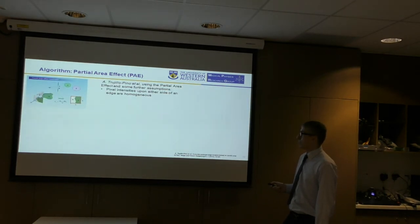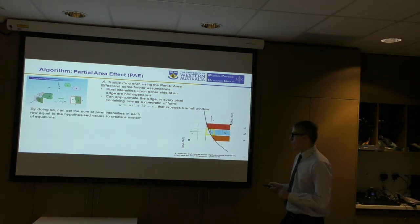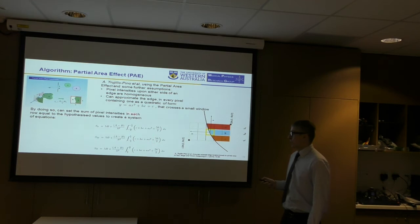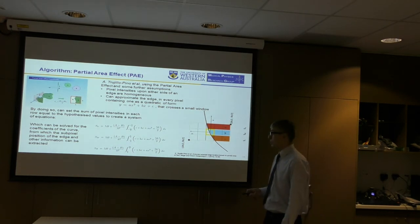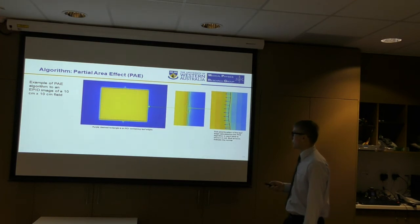The clever part is how the researchers use this hypothesis, by making some further assumptions that pixel intensities upon either side of an edge are homogeneous, and that you can approximate the edge in every pixel that contains one as a quadratic that has low curvature, so it crosses a small window. By doing so, you can take the sum of the pixel intensities in each row that you measure, and then set it equal to the values by the hypothesis and assumptions. Using this, we have three equations, which we can solve for the three unknowns. With that, you've got the coefficients that describe the curve within each pixel, the coefficients that describe the sub-pixel curve within each pixel containing an edge. So, here's an example of the algorithm applied to a 10x10 input image, and I've just zoomed in here, and this is the results that you get when you apply that algorithm. Red is the sub-pixel location of the edge, and these blue arrows are edge normals using the coefficients of the curve.